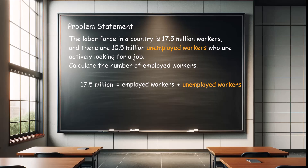Third, substitute the number of unemployed workers into the formula. In this example, the number of unemployed workers is 10.5 million workers, so let's substitute 10.5 million workers into the formula. Fourth, subtract the number of unemployed workers from both sides of the equal sign. In this example, that means subtracting 10.5 million workers from both sides.